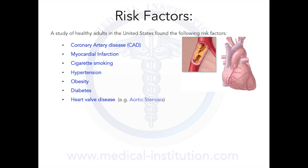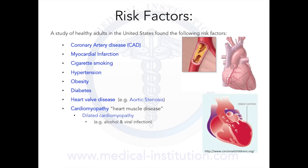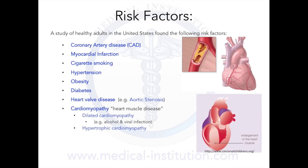Heart valve disease, such as aortic stenosis, which can eventually lead to left ventricular hypertrophy and ischemic changes similar to hypertension. Cardiomyopathy, which is another name for heart muscle disease. For example, dilated cardiomyopathy, in which the heart's ability to pump blood is decreased because the left ventricle is enlarged, and is associated with alcohol and viral infection. Hypertrophic cardiomyopathy is associated with thickening of the heart muscle, most commonly at the septum between the right and left ventricle.